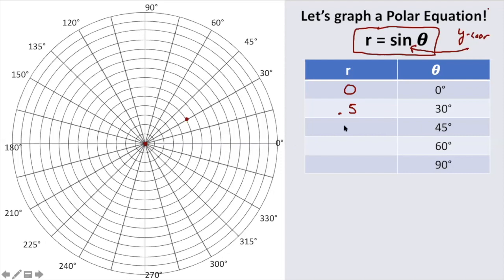At 45 degrees, you're at root 2 over 2, which is about 0.707 or 7 tenths. So I'm going to start at the origin. I'm going to go towards 45 degrees and do 7 tenths. 1, 2, 3, 4, 5, 6, 7. So my point is right there.